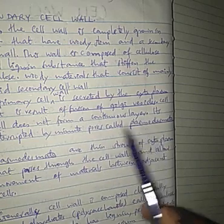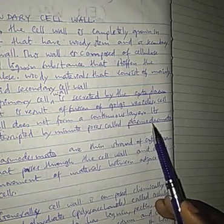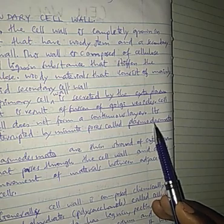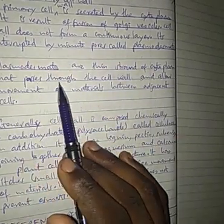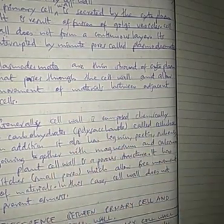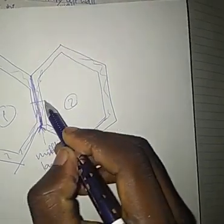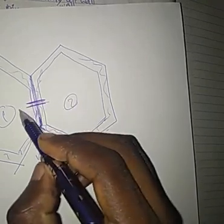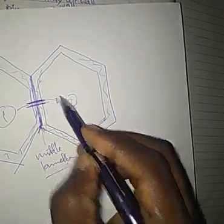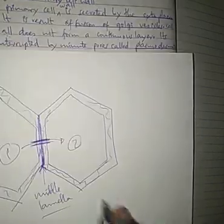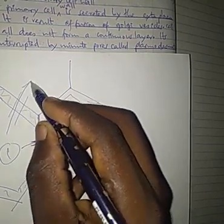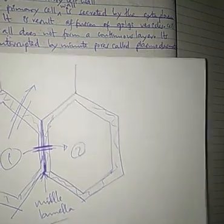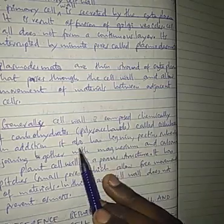The cell wall does not form a continuous layer; it is interrupted by minute pores called plasmodesmata. Plasmodesmata are thin strands of cytoplasm that pass through the cell wall and allow movement of material between adjacent cells. For example, a pore in one cell wall allows the movement of material from the cytoplasm of one cell to another.